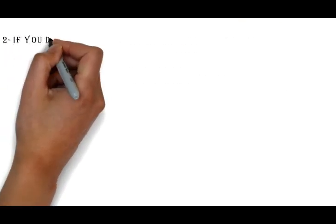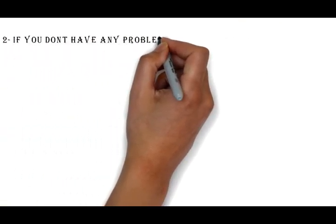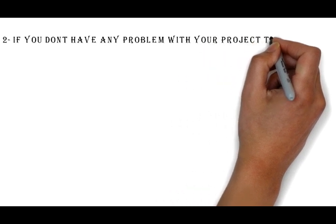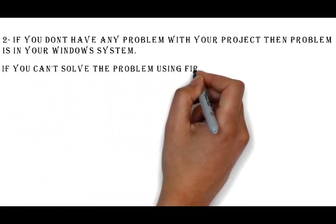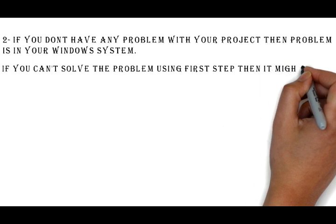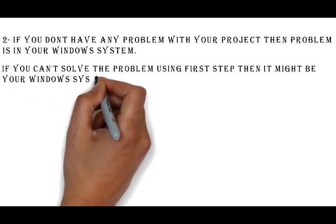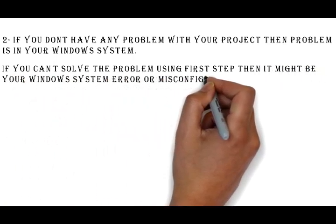But if you don't have any problem with your project, then the problem is in your Windows system — that is the second cause. So that means there is no problem with your project. If you can't solve the problem using the first step, then it might be a Windows system error or misconfiguration.